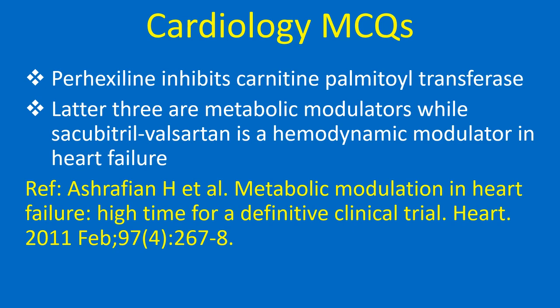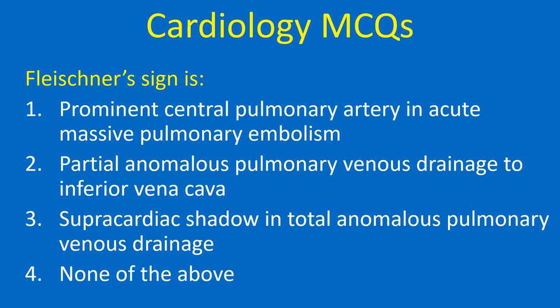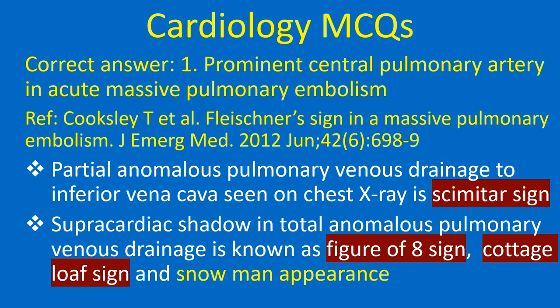Fleishner sign is: 1. Prominent central pulmonary artery in acute massive pulmonary embolism, 2. Partial anomalous pulmonary venous drainage to inferior vena cava, 3. Supracardiac shadow in total anomalous pulmonary venous drainage, 4. None of the above. Correct answer: 1. Prominent central pulmonary artery in acute massive pulmonary embolism.